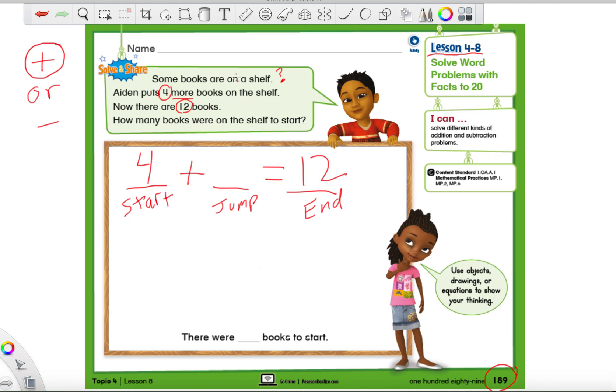Where do I put the total in an addition sentence? Does it go next to the plus sign or after the equal sign? It's going to go after that equal sign. So now we have four plus blank equals 12. So right now we have our start number, we do not have our jump number, and we have where we're going to end.